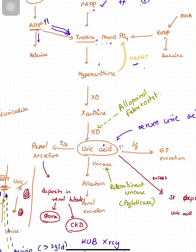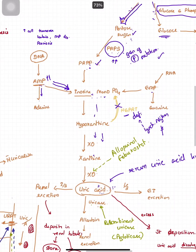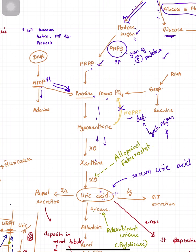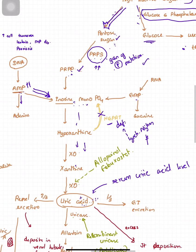If you have HGPRT deficiency, there is no back pathway, so uric acid formation just continues unchecked. HGPRT deficiency is seen in Lesch-Nyhan syndrome, which is characterized by self-mutilation and hyperuricemia. So the risk factors for hyperuricemia include increased cell turnover diseases, PRPS gain-of-function mutation, HGPRT deficiency, and glucose-6-phosphatase deficiency.